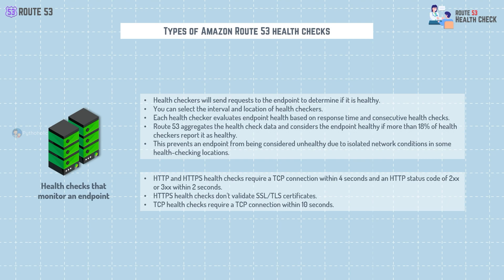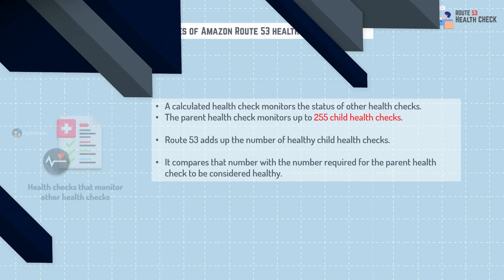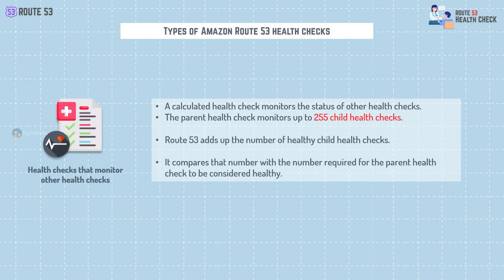This way, if there is a problem with one or two health checks in a particular location, it won't make your whole resource look unhealthy. There are different types of health checks you can use: HTTP, HTTPS, or TCP — each has different requirements for response time and status code. For HTTP and HTTPS, health checks require a TCP connection within 4 seconds and an HTTP status code of 2xx or 3xx within 2 seconds. HTTPS health checks don't validate SSL/TLS certificates. The TCP health check requires a TCP connection within 10 seconds.